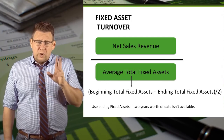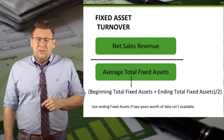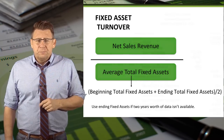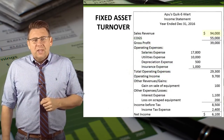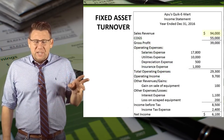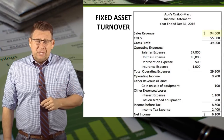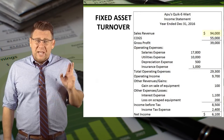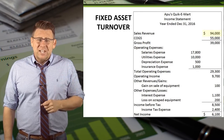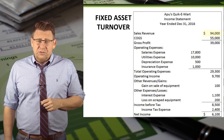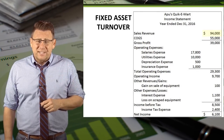This is a ratio where the higher the number the better. Here is the income statement of a sample company. We will use the highlighted sales revenue to determine fixed asset turnover.